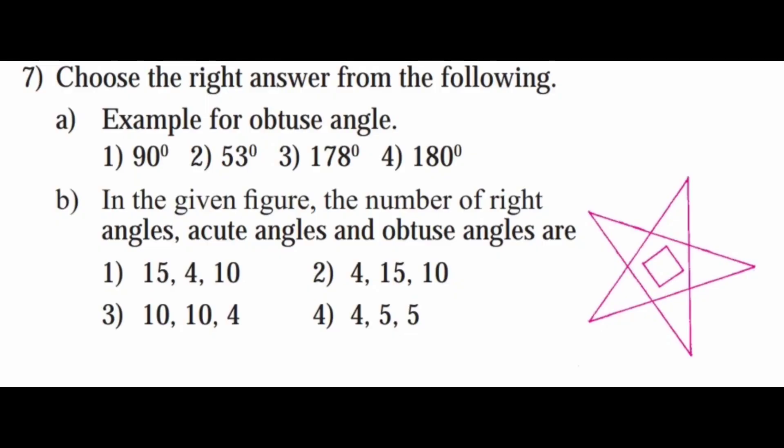Seventh question: choose the right answer from the following. First one — give an example of an obtuse angle from: 90°, 53°, 178°, or 180°. An obtuse angle is more than 90 degrees and less than 180 degrees, so the answer is 178 degrees.